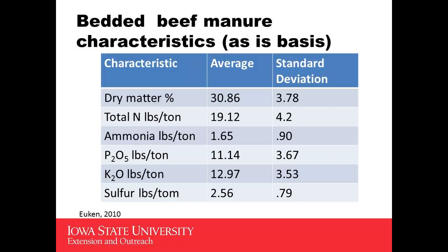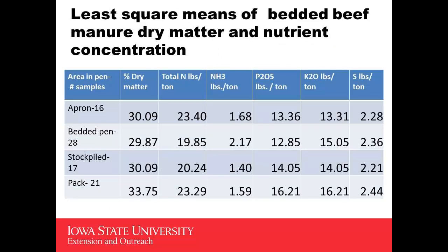The higher the standard deviation, the greater the variability. I spent my entire thesis sampling manure, and it's really hard to get a low standard deviation. Simply from the fact that the cows don't always poop where you think they're going to. So collecting manure samples and what impacts those manure samples is never very consistent. Here is a summary of that same data by sampling location — aprons, pens, stockpiles, and packs — and we don't see a whole lot of difference between locations for total N, P2O5, or potassium.